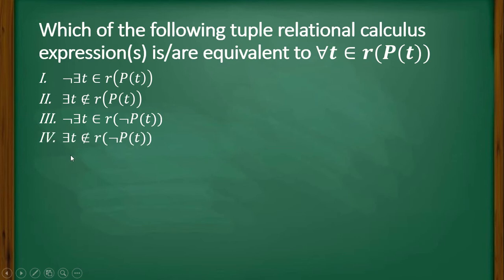Option IV: There exists t not belongs to r, not P(t). Now the answer choices are: option A, I only; option B, II only; option C, III only; option D, III and IV only.